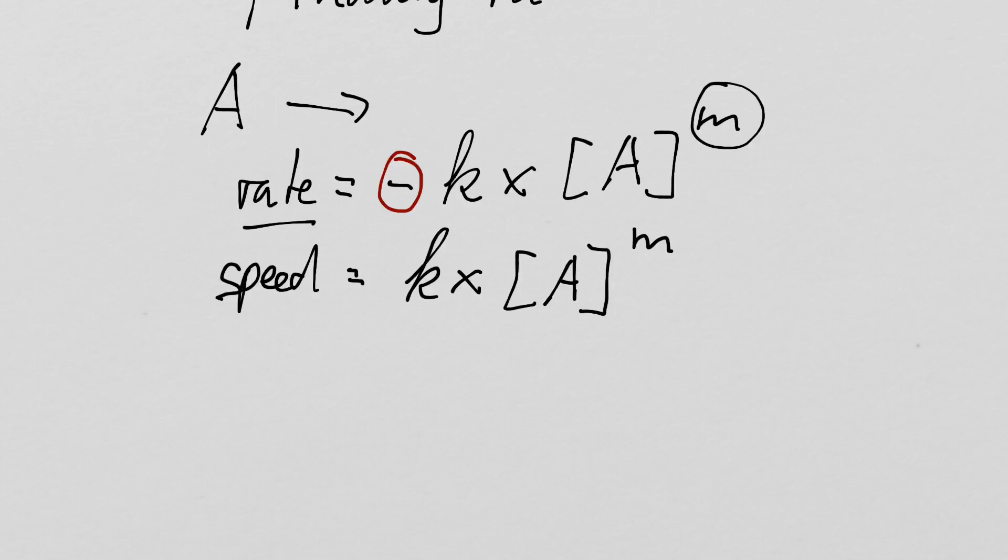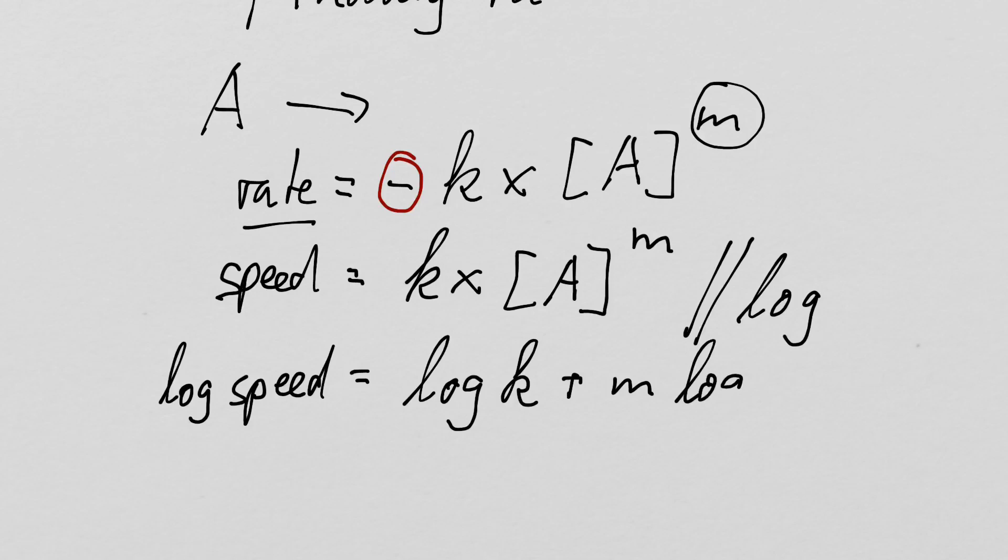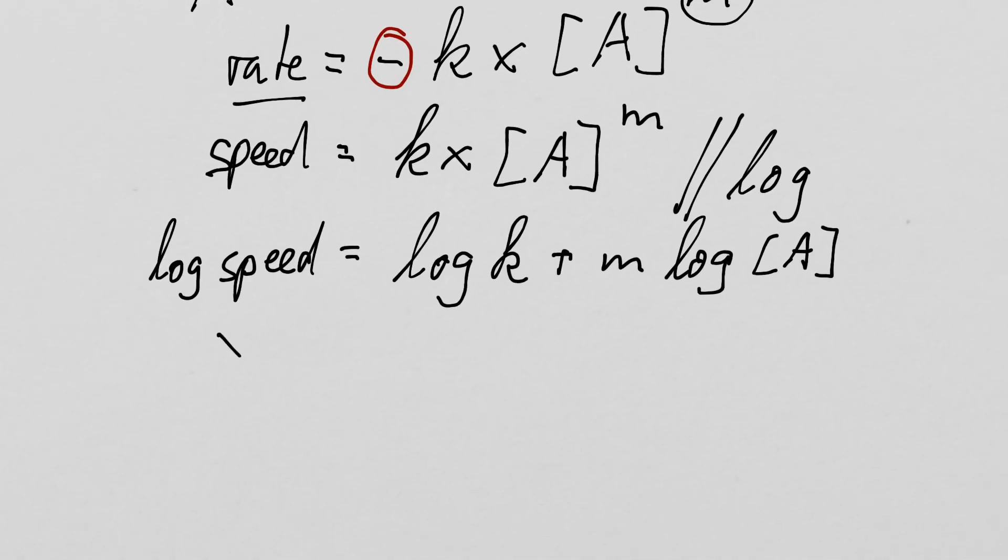And now we can log both sides and we get log speed equals log k. That is our rate constant. And the times, under rules of logarithm, turns into a plus sign plus m times log of the concentration of A. And what we have here is the equation for a straight line Y equals C plus mX, where this part is our constant C and this part here is our X.